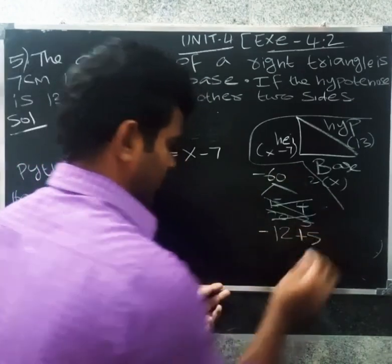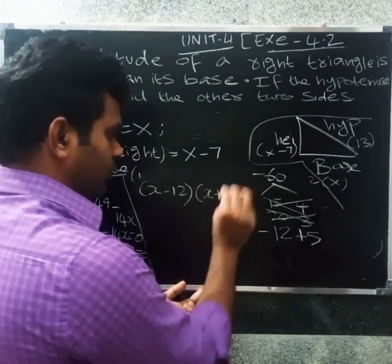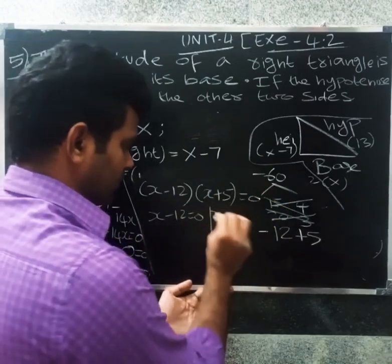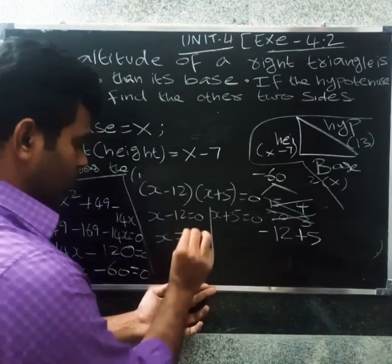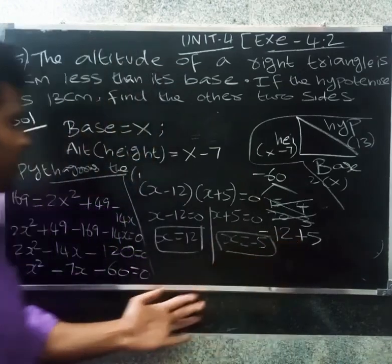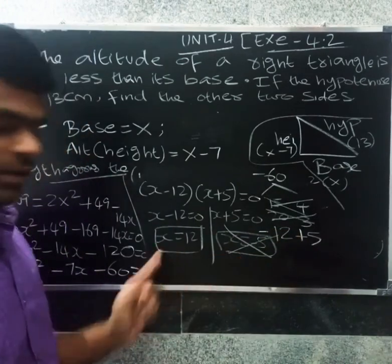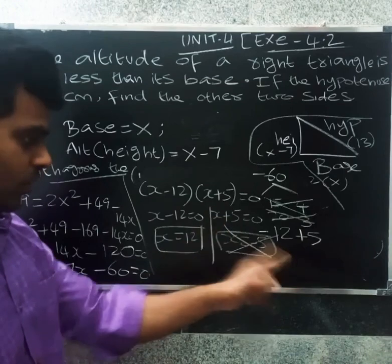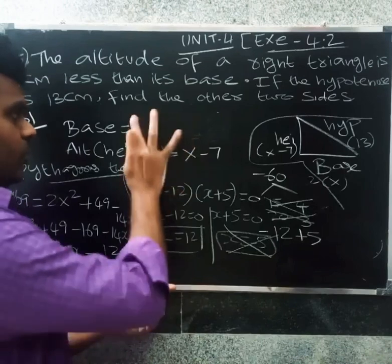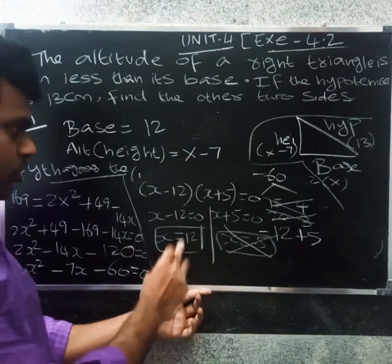So factoring: minus 12 plus 5. The answer is (x minus 12)(x plus 5) equals 0. So x minus 12 equals 0 gives x equals 12. The negative value x equals minus 5 is rejected since a side cannot be negative.